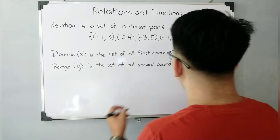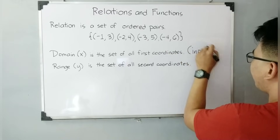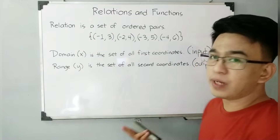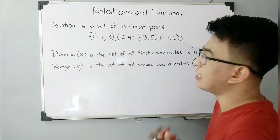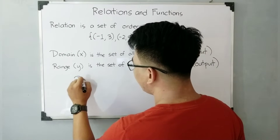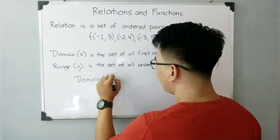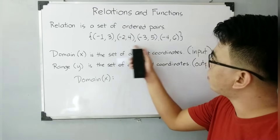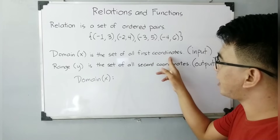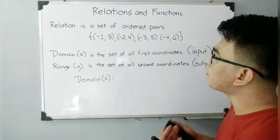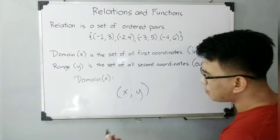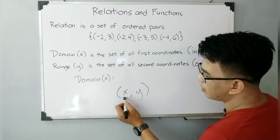The domain is also known as your input, and range is your output. When we say domain, usually what's being asked is the domain and range of a given relation or function. So if I will be asked for the domain of this given relation — from our definition, it is the set of all first coordinates. The coordinates are represented by X, Y, so the placement of the domain or X value is always the first number in the ordered pair.